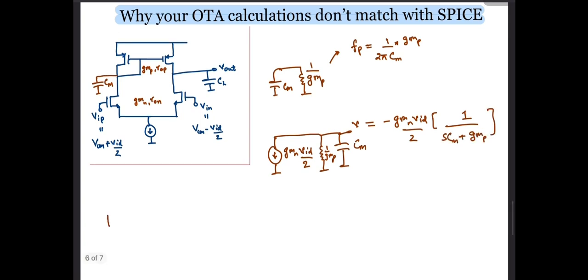This forces the PMOS to pull a current of Gm times V. We also have another current of Gmn times Vid by 2 coming from the bottom NMOS.